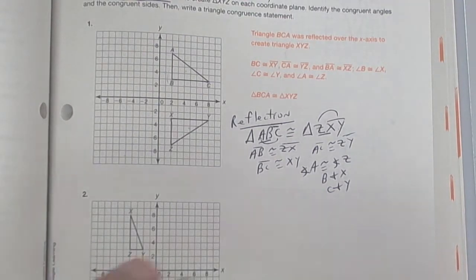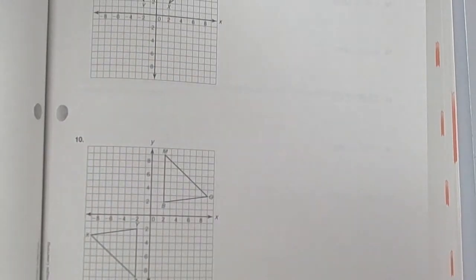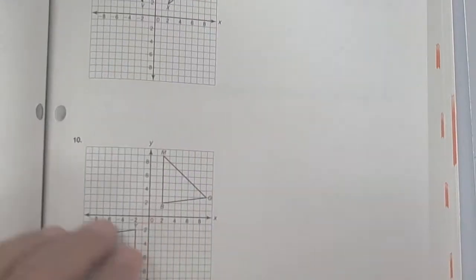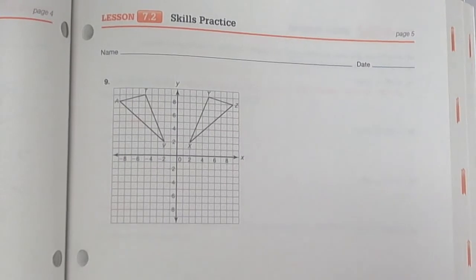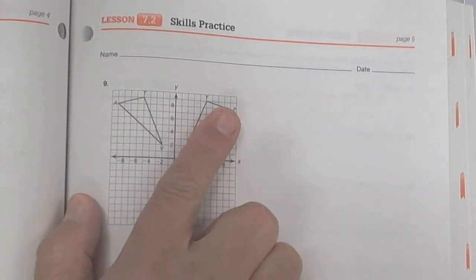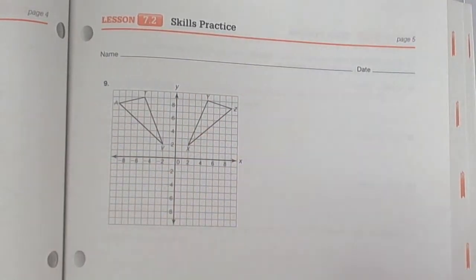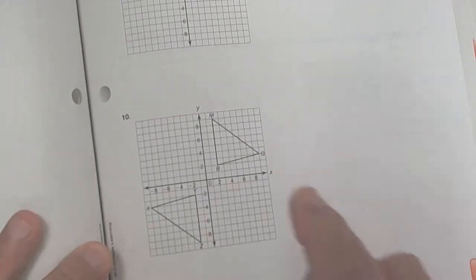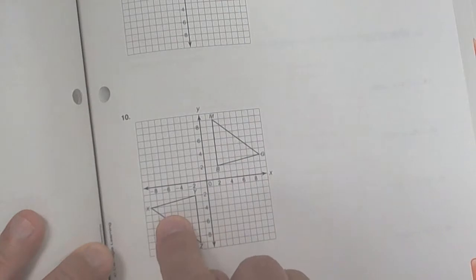Problems one through ten follow that same format. Number nine looks like a flip — that's a reflection — though you could also say 90 degrees counterclockwise or clockwise depending on which figure you start with. This other one I would call a definite 180 degree rotation.